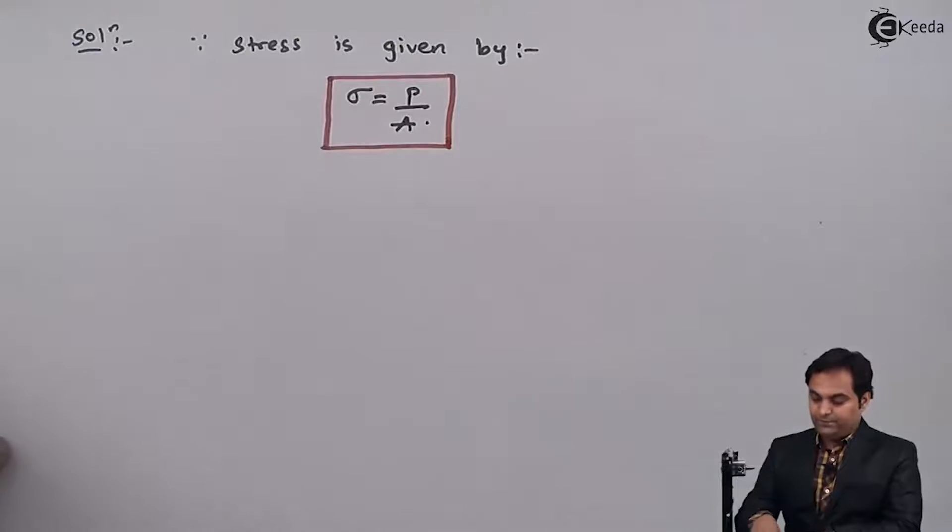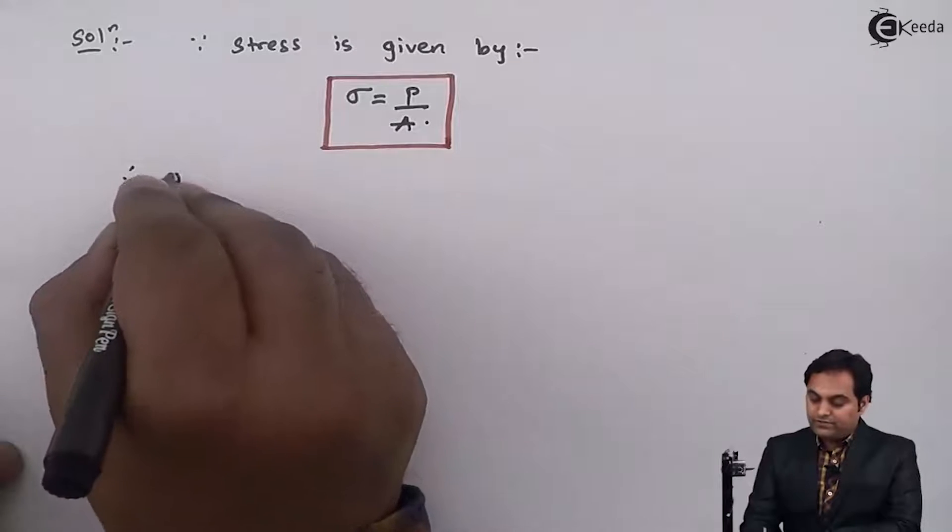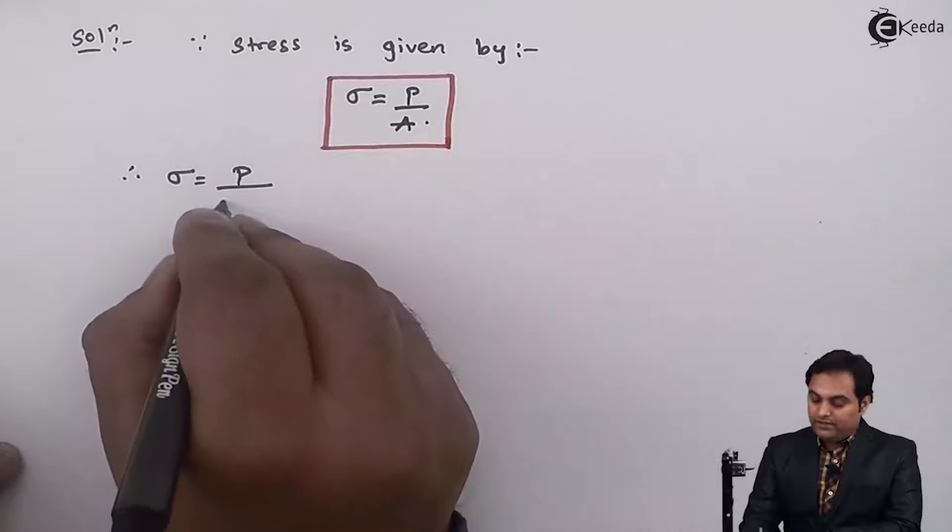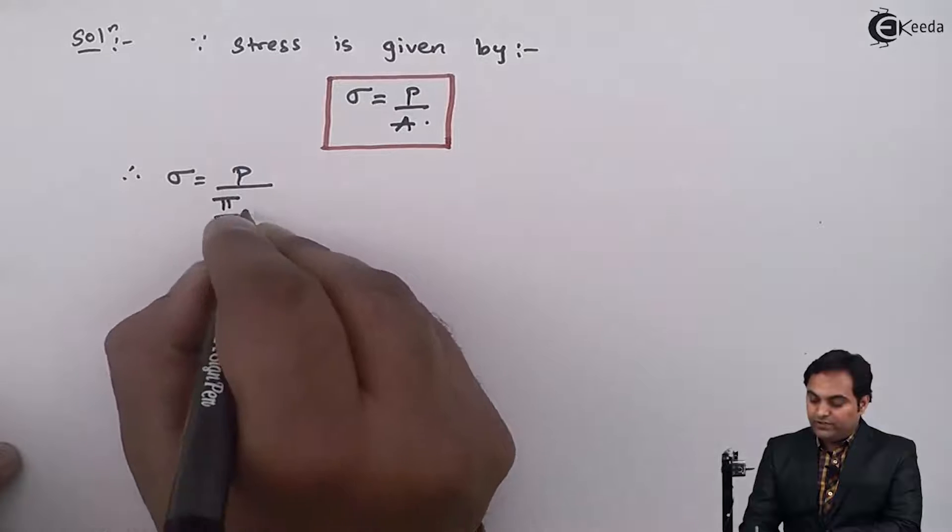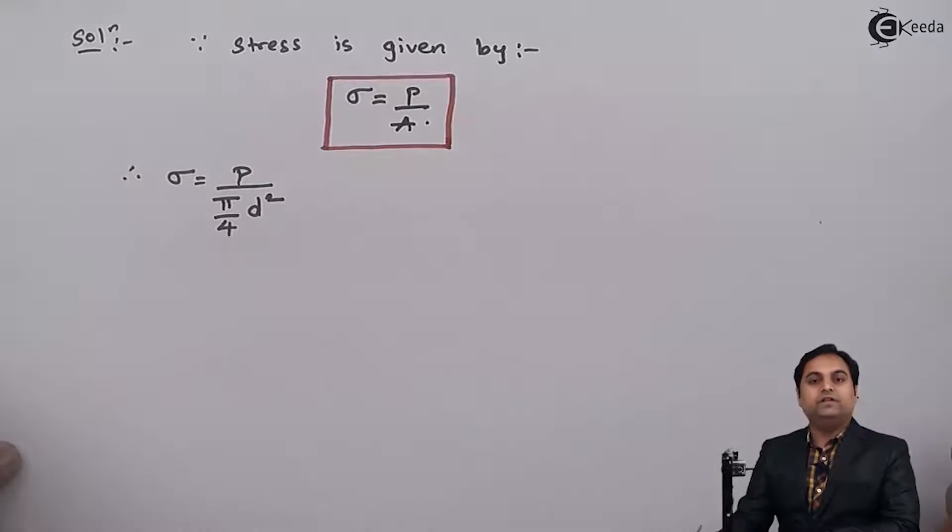So therefore stress is equal to P upon area is pi by 4 into D square, because it is the cross sectional area.